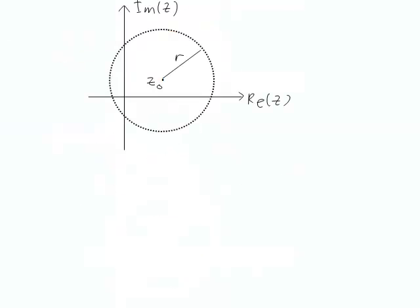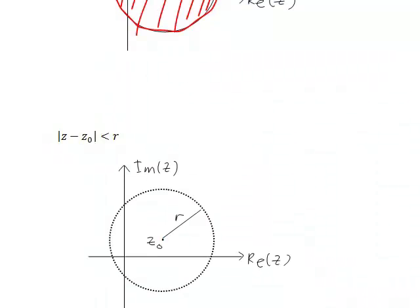What about |z - z₀| < r? In that case, we include all points inside the circle centered at z₀ with radius r, but the boundary is not included. We often draw the circle with a dotted or dashed line to show that the boundary is not included in the region.